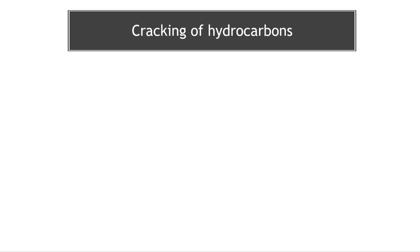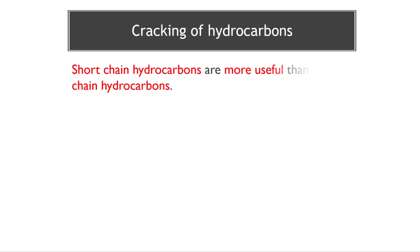So cracking of hydrocarbons - why is it important? If we think back to when we talked about fractional distillation and the different fractions produced from crude oil, the smaller fractions at the top of the fractional distillation column - fractions like methane and petrol - are very useful and very important. Whereas at the bottom of the column we've got these bigger molecules, bigger hydrocarbons that aren't that useful. We can use them for tarmac and roads, but they're mostly just waste products - residue.